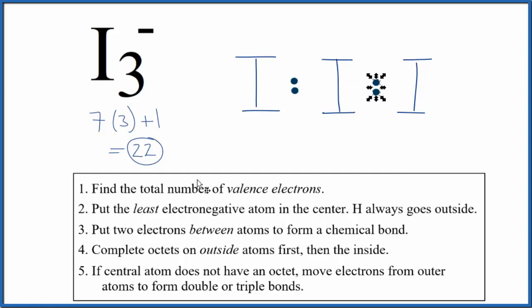We've used four valence electrons. Now we're going to go around the outside atoms here, the iodines on the outside, and complete their octets. So the iodines on the outside have an octet.